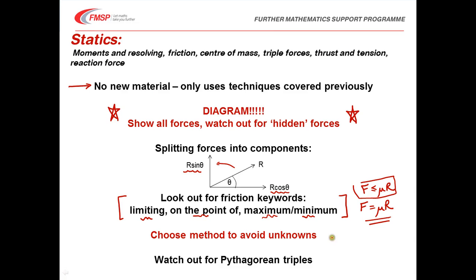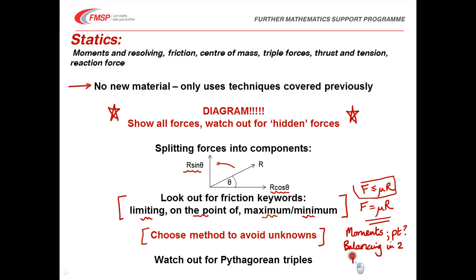When choosing your method, you have a selection of techniques: taking moments — choosing which point to take moments about — and balancing forces in two perpendicular directions. You're often choosing a method that avoids an unknown force. For example, to avoid a contact force, take moments about the point through which that force acts. Also watch out for Pythagorean triples — exam writers love those, and they can simplify your calculations significantly.